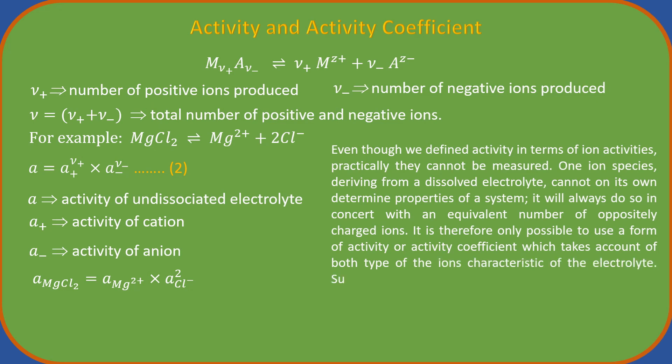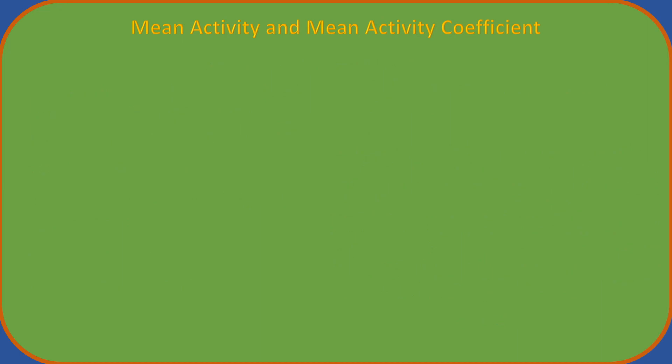Such forms are known as mean activities and mean activity coefficients. These are represented as a plus or minus and gamma plus or minus. The mean ionic activity is the geometric mean of ionic activities. Similarly, the mean activity coefficient is the geometric mean of the individual coefficients. See how we express it.